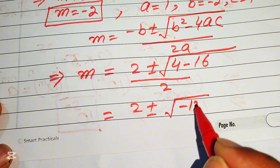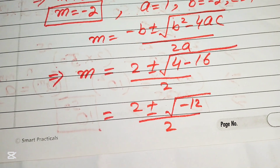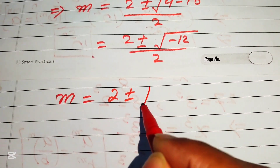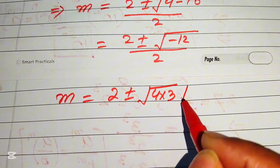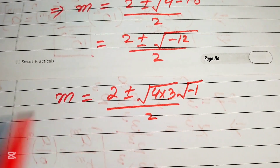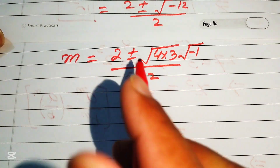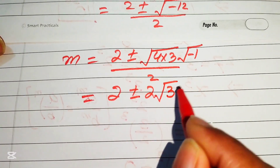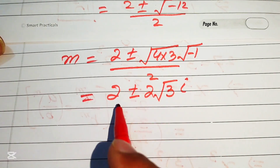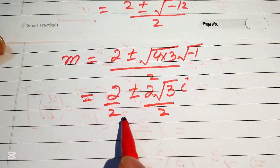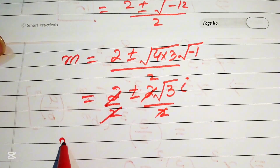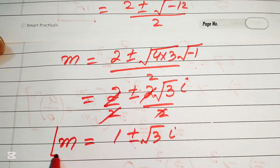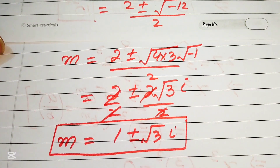We write minus 12 as minus 1 times 4 times 3. The square root of 4 is 2 and square root of minus 1 is iota. So m equals 2 plus or minus 2 root 3 iota, divided by 2. The 2s cancel, giving the two complex roots: m equals 1 plus or minus square root of 3 times iota.